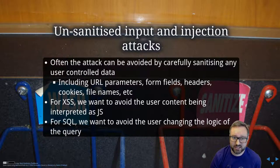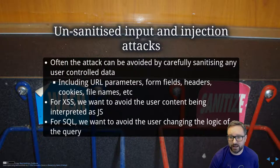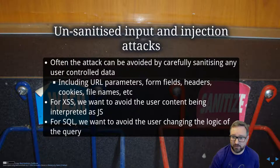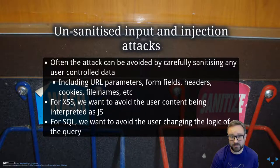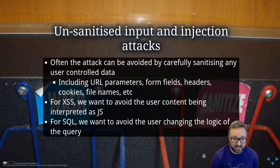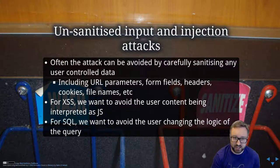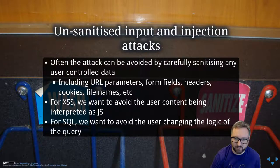So how do we prevent injection attacks? Basically, whenever we are generating output that we're going to send somewhere else for further processing — to avoid any kind of structured output vulnerability — we need to do careful validation of the inputs that we're accepting into our code. We need to make sure that we are escaping and sanitizing what we're using so that we're using it in a safe way at all the different levels where it's being used.